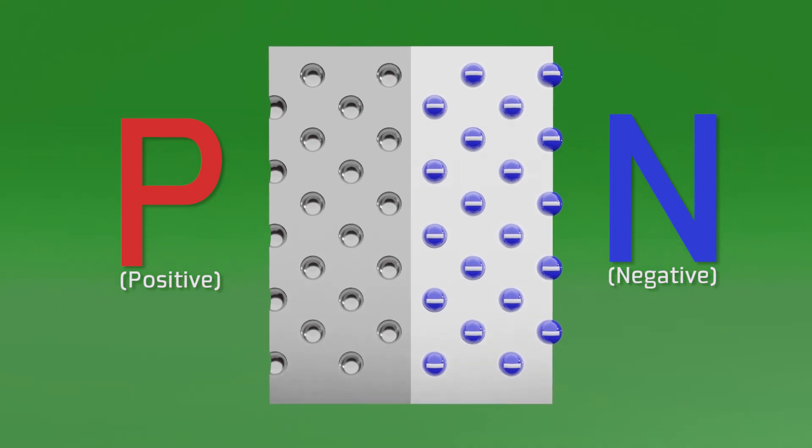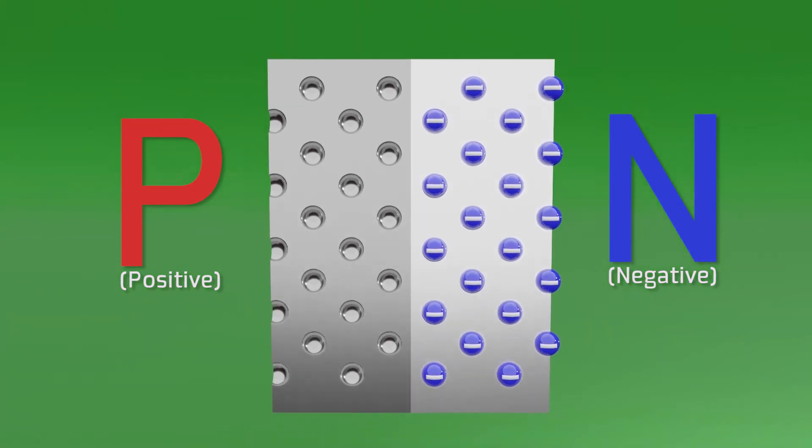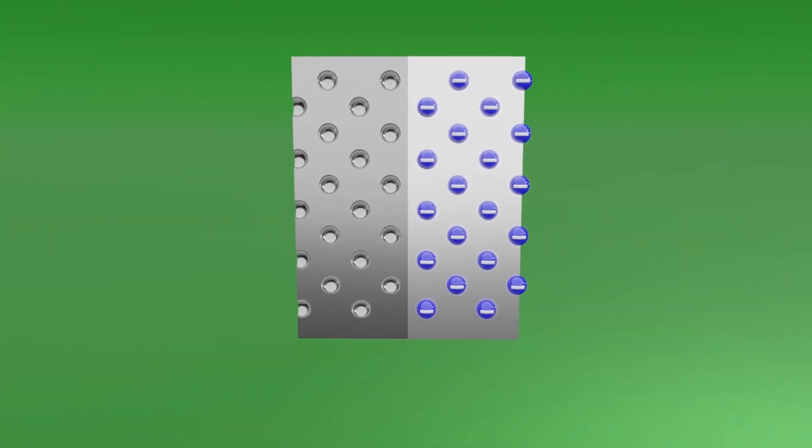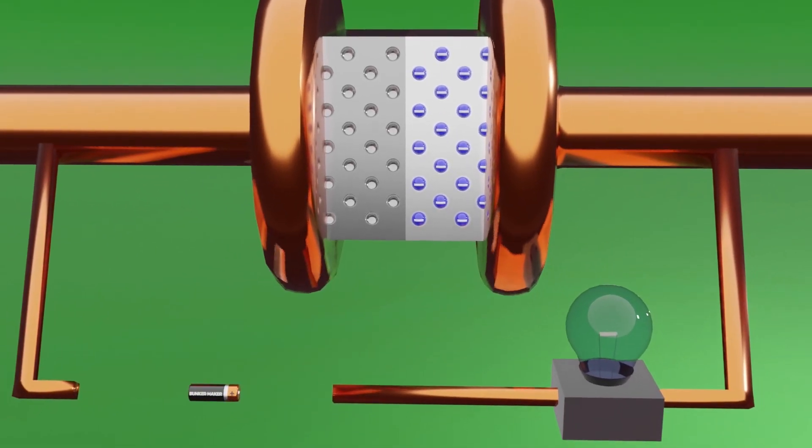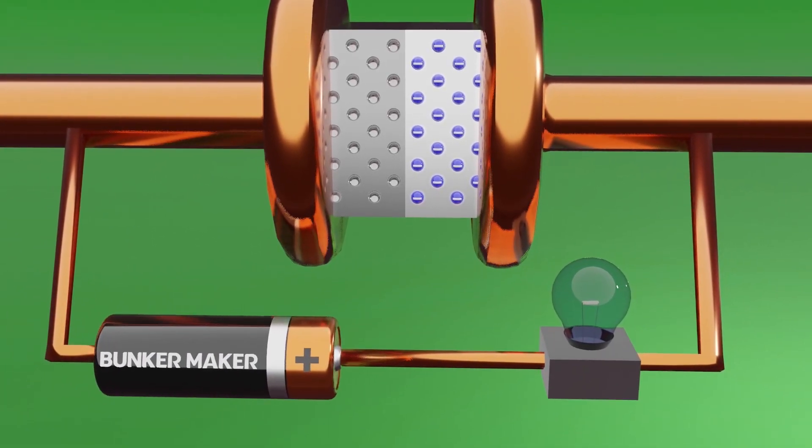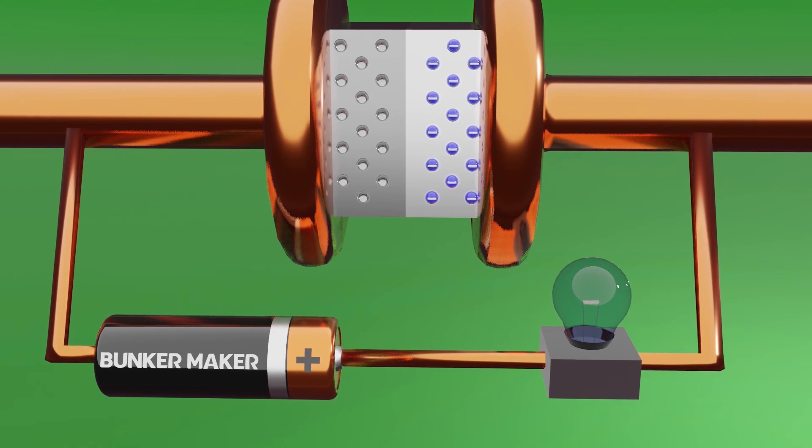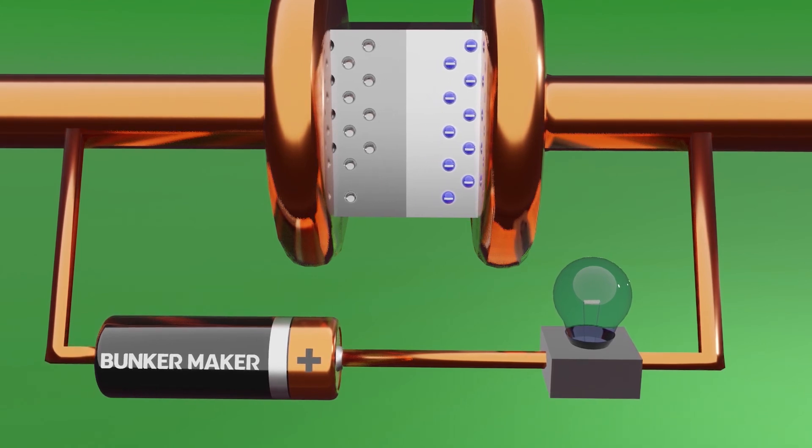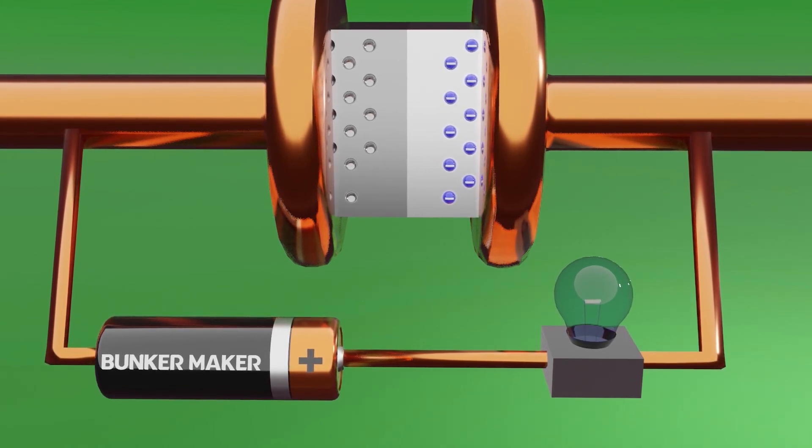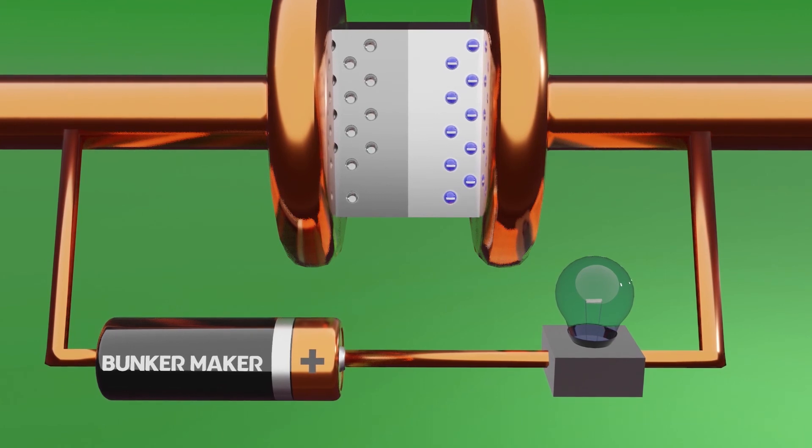Having these two semiconductors together, nothing happens. But if we connect the positive pole of a battery to the n-type semiconductor, nothing happens either, because the electrons are going to try to move towards the positive terminal, and therefore there will be no current flow through the diode.